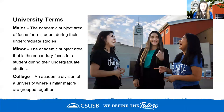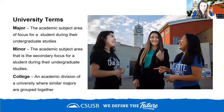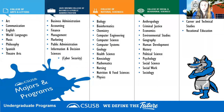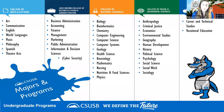The second definition of 'college' is an academic division within a university where similar majors are grouped together under one academic leader called a dean. For example, at CSUSB we have five different colleges. The College of Arts and Letters groups majors in fine arts and creative arts, while the College of Natural Sciences groups majors focused on science and technology.